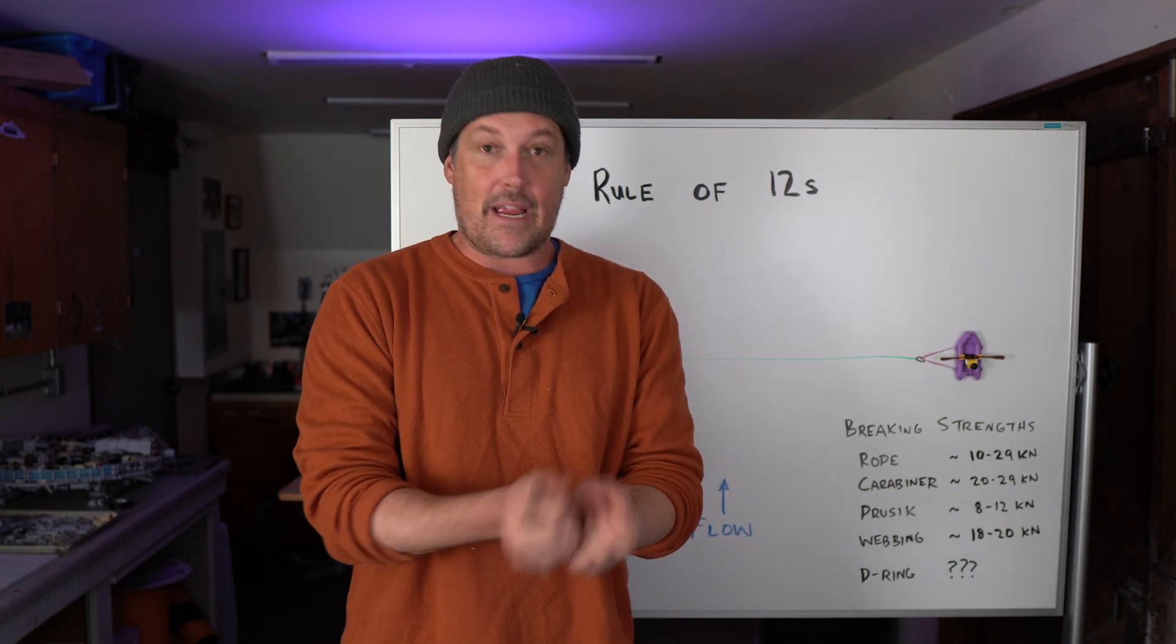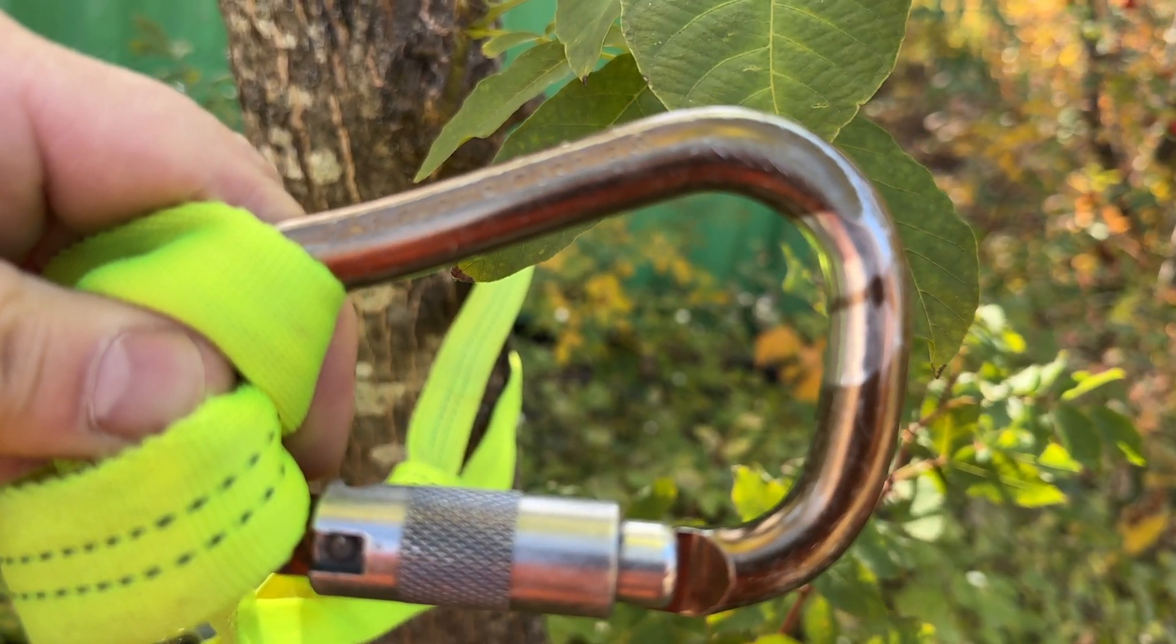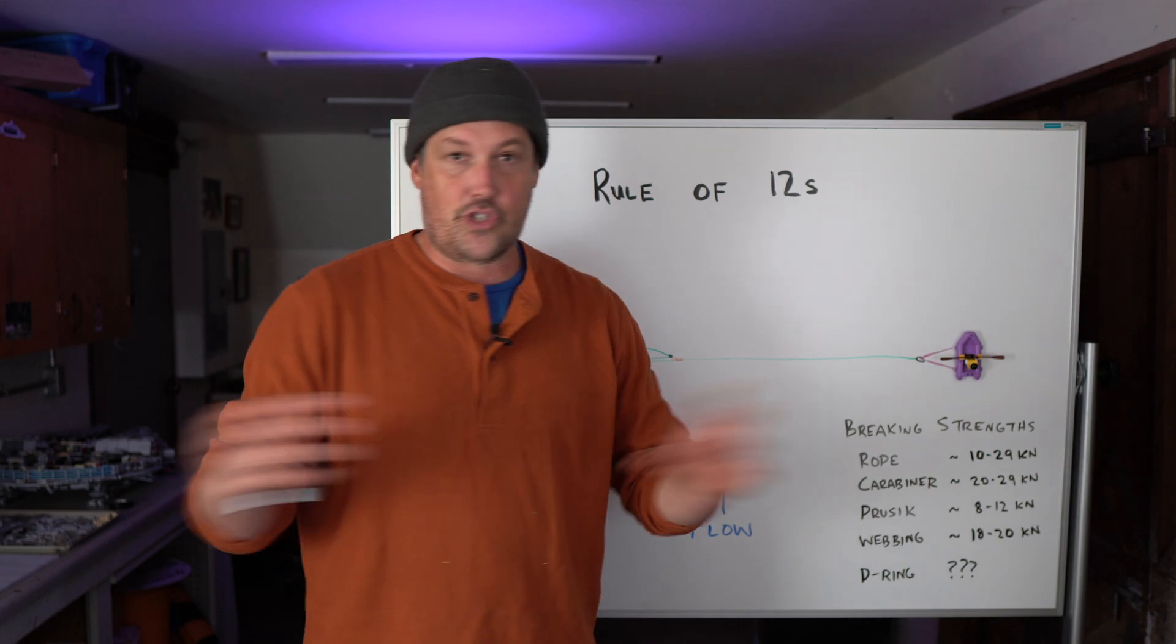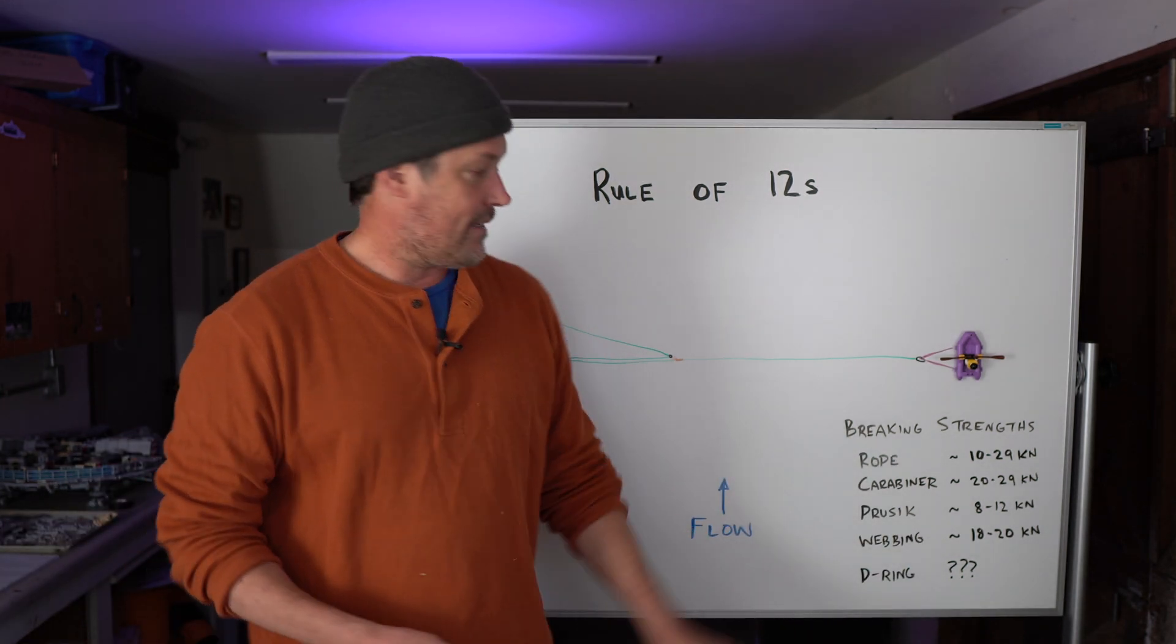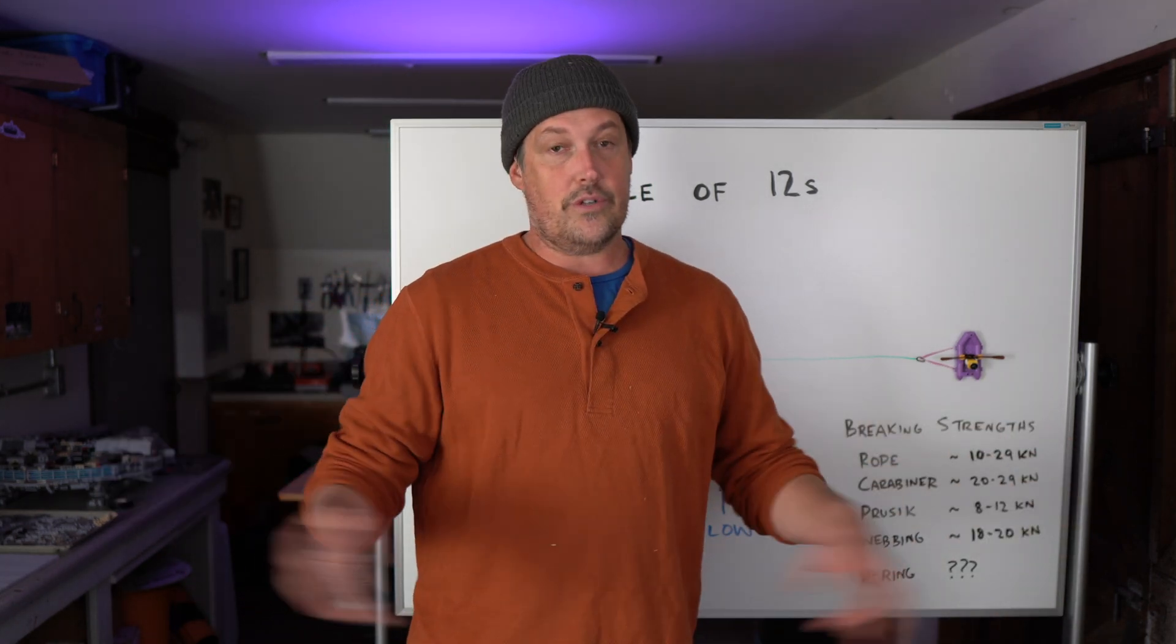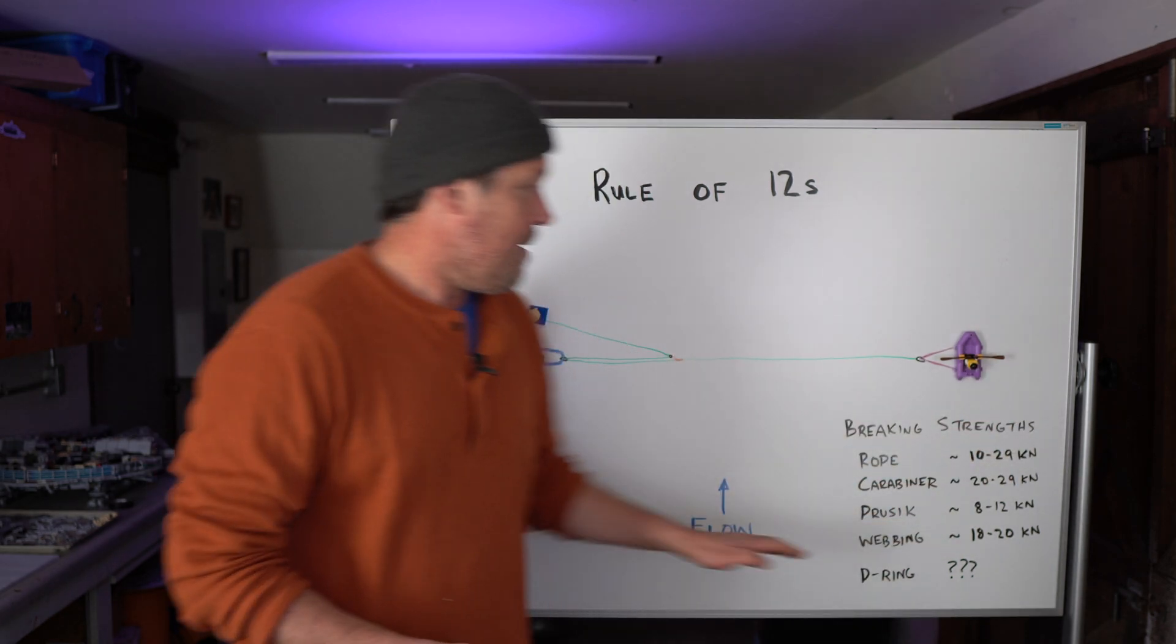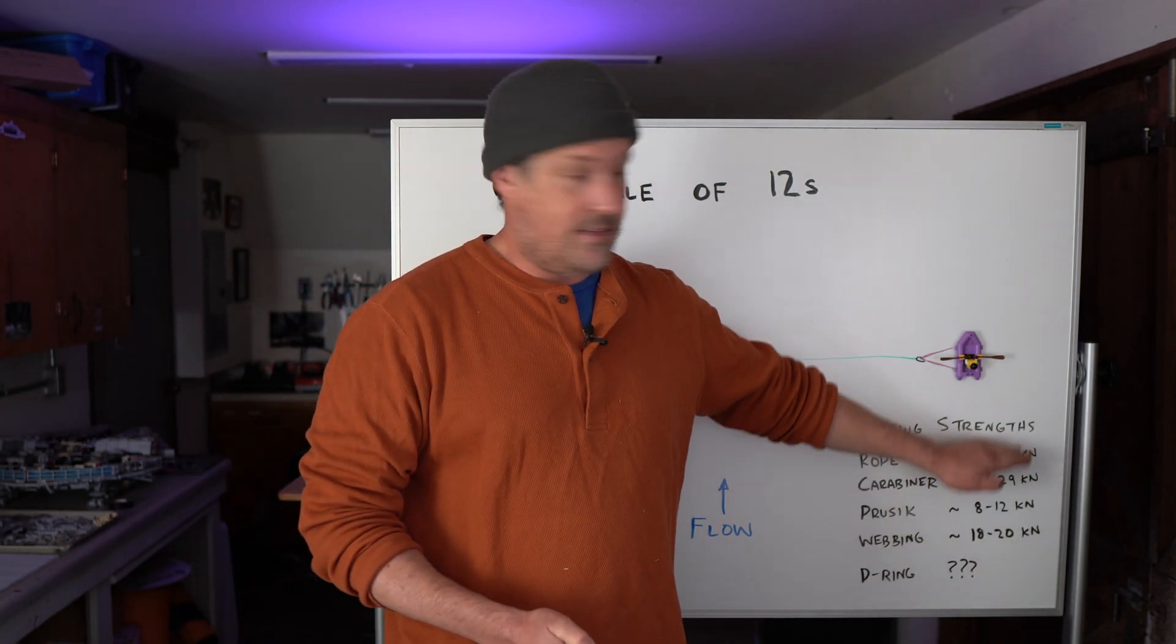Carabiners, if you drop them, they can get micro cracks. And so brand new, they're 20 to 29 kilonewtons. But as they get older and they get used, this goes down. Prusik, same thing. Dirt, if you have a knot tied in there, if you have a double fisherman's, that takes away the strength. Ideally, you have a prusik with sewn loops. Webbing, again, gets older, dirty, all those things. The knots in the webbing, you'll generally use a water knot that's less efficient. So it's not this strong. So at 12 kilonewtons, we're getting a little too close for comfort to these things.